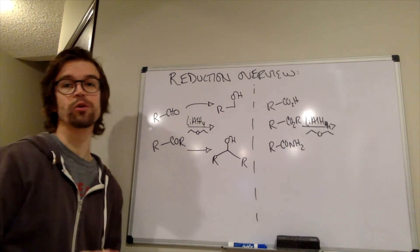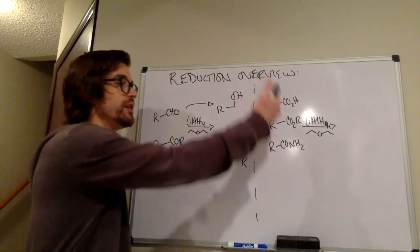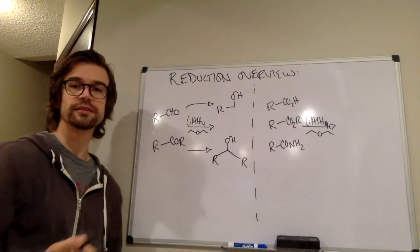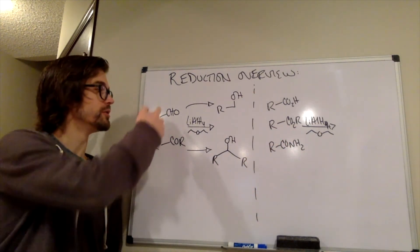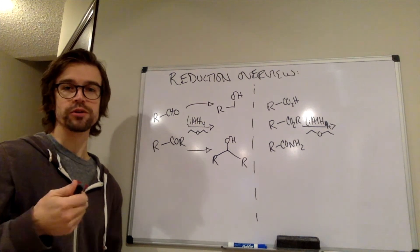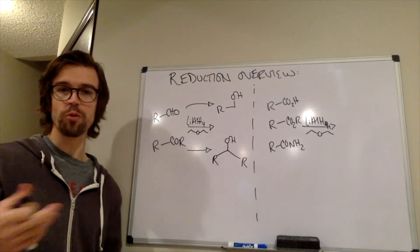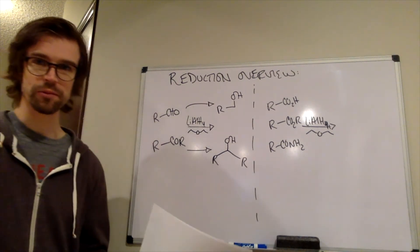And we could have a molecule where we have both one of these and one of these. And if we only wanted to reduce these, we would use sodium borohydride. But if we wanted a global reduction, we could use lithium aluminum hydride.